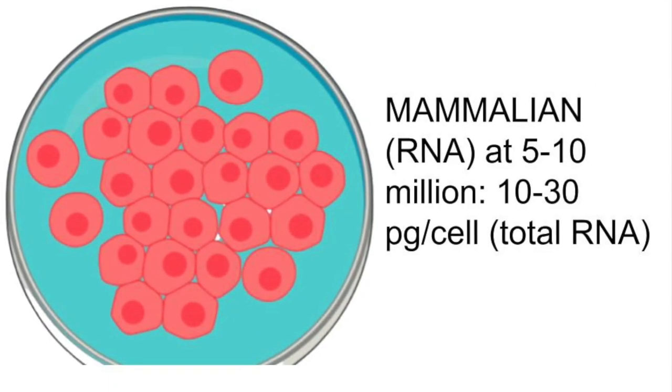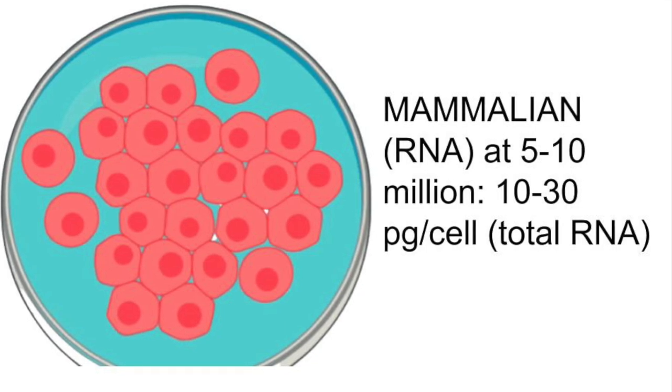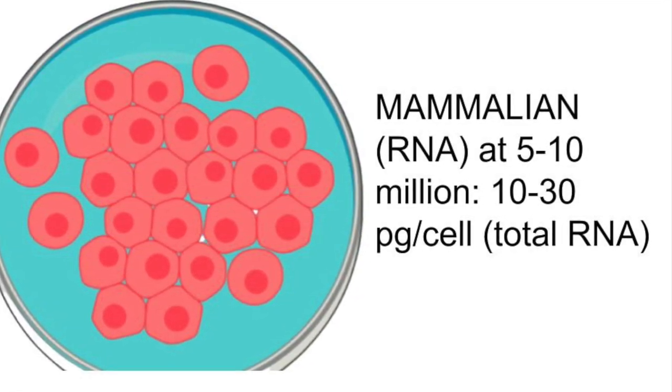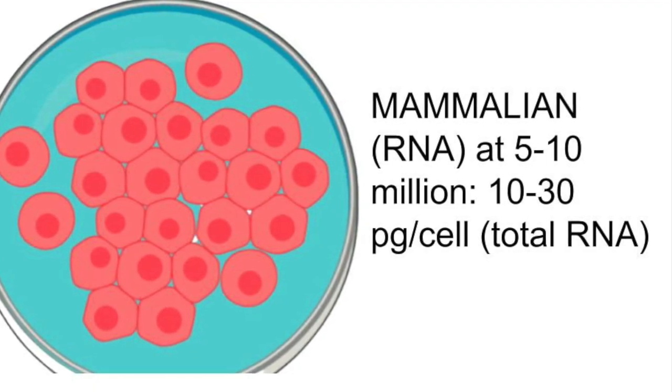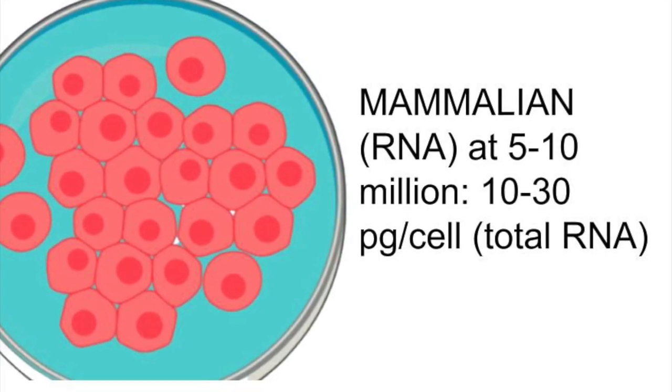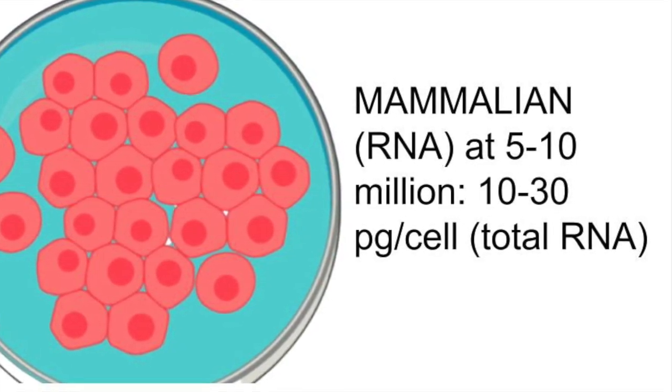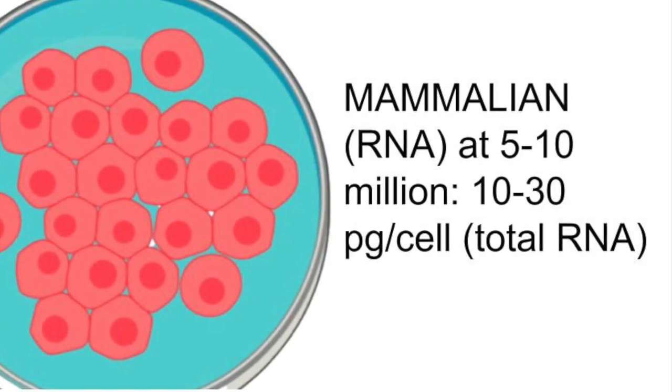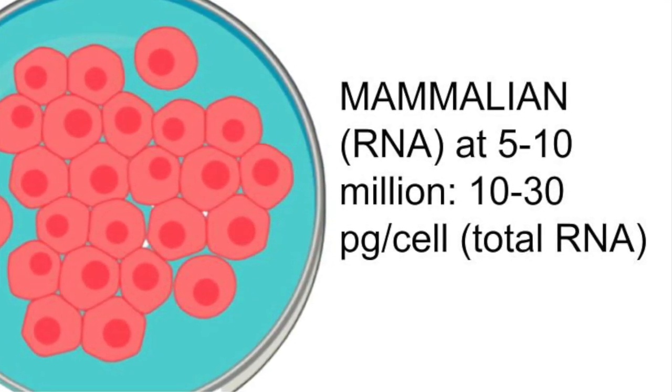For RNA you would actually get slightly different amounts depending on the state of the cell, so whether the cell is quiescent or metabolically active. You're going to have different levels of RNA in the cell, so it will be different amounts when you extract it. In general, you can expect 10 to 30 picograms of total RNA per cell.